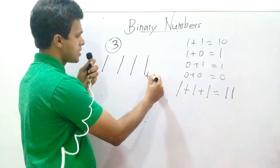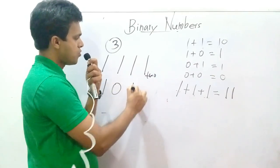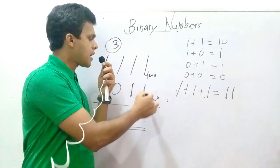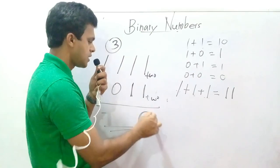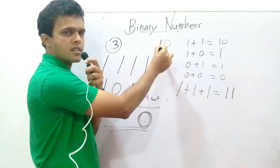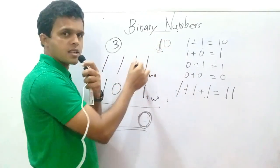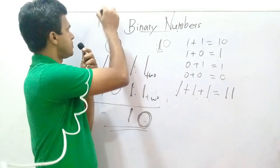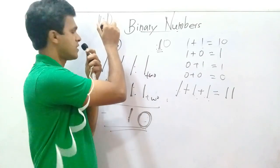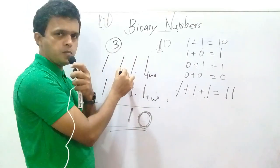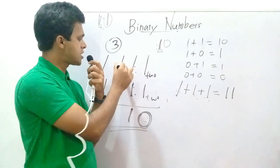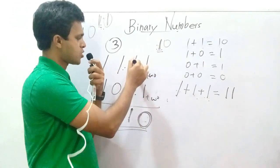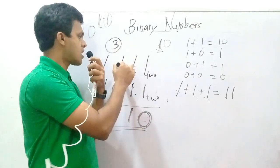Next sum, number three: one-one-one-one (1111) base two plus one-zero-one-one (1011) base two. One plus one is ten (10) — remainder is one. Again: one plus one plus one equals eleven (11); write one here, remainder is one. One plus one is ten (10); zero plus zero is zero.